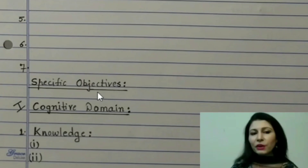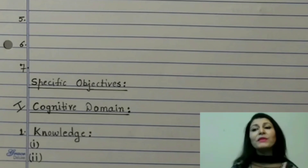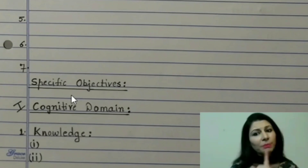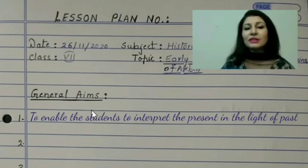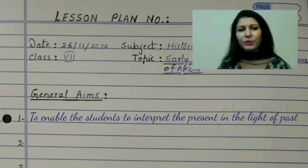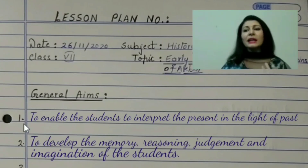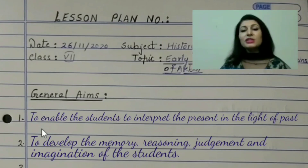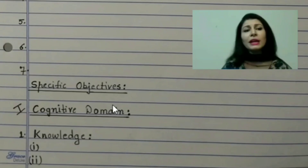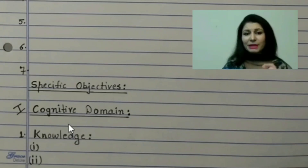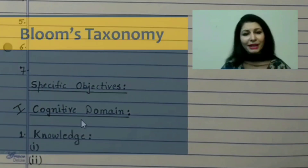Then after general aims, the second heading would be specific objectives. Specific objectives are related to the particular topic which you are going to teach in the class. General aims are related to the whole subject which you teach, and specific objectives are related to that specific topic which you are going to teach in the class. For example, general aims of teaching history are to enable the students to interpret the present in the light of past, or to develop the memory, reasoning, judgment and imagination of the students. So they are general in nature. General aims are difficult to achieve but specific aims can be achieved easily because they are not related to the whole subject but only to the specific topic which you are going to teach in the class.